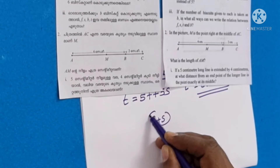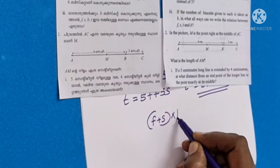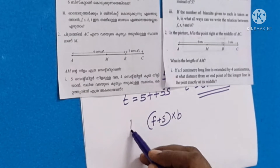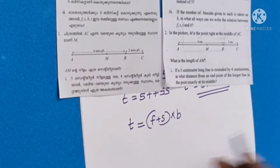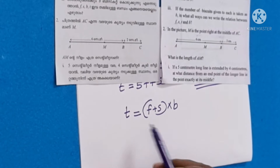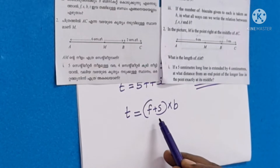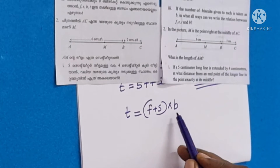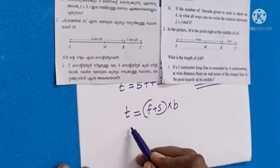The number of biscuits given to each is known as B. So we have T equals (F plus S) times B.